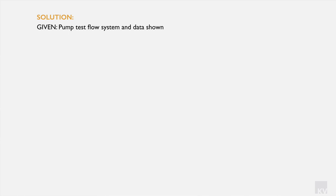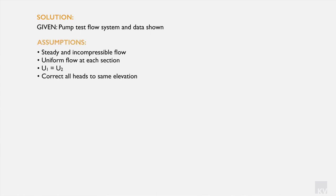To solve this problem, we start with what we are given: the data in tabular form and a diagram of the pumping arrangement. The suction gauge and delivery gauge are offset by 600 millimeters, which we must correct for. Our assumptions are: steady and incompressible flow, uniform flow at each section, and that U1 equals U2. Since we were not given enough data to identify the individual velocities, we assume they are equal. We must also correct all heads to the same elevation.